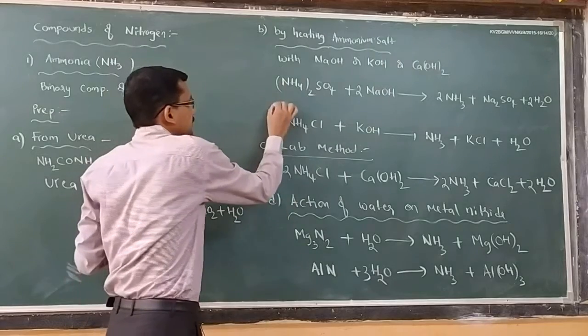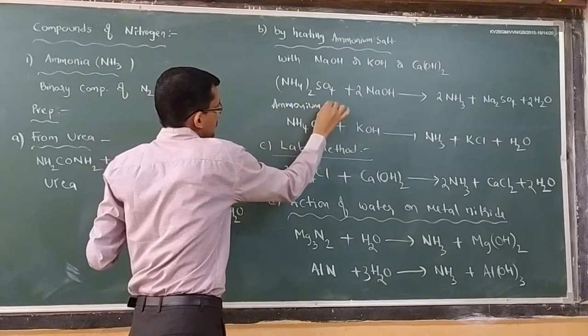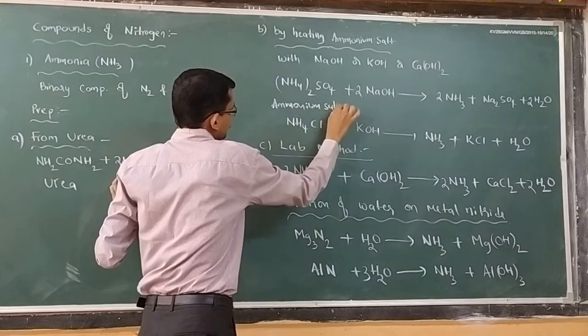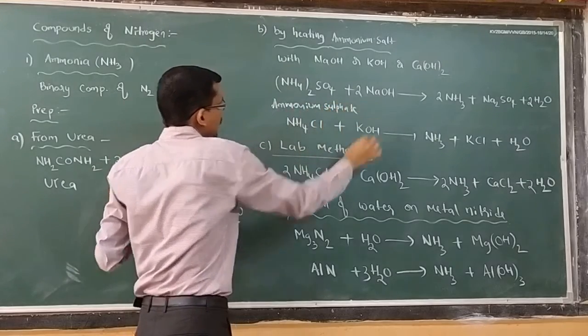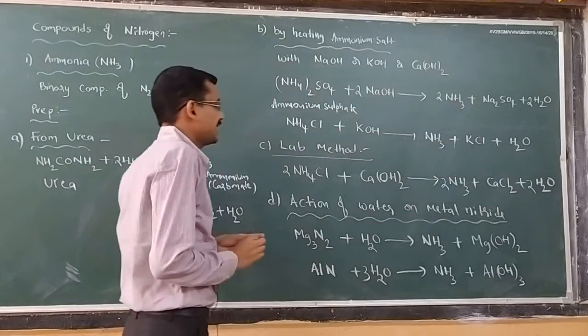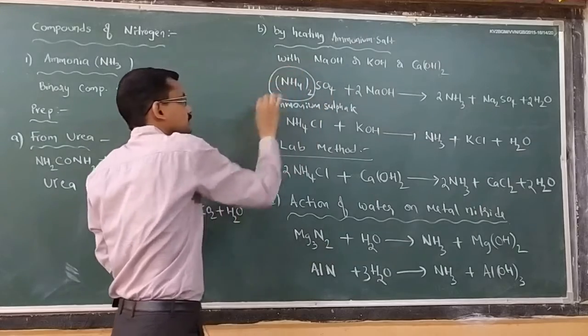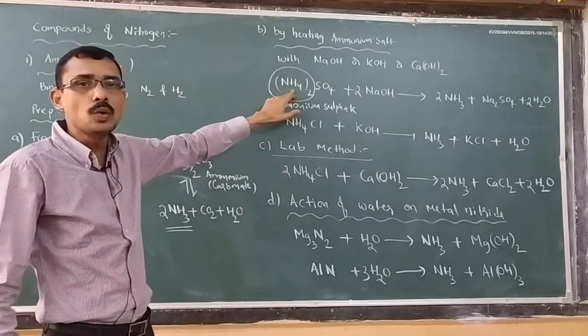Ammonium sulfate reacting with sodium hydroxide to give ammonia. Very simple: ammonium sulfate has ammonia here. In this case it has ammonium ion converting into ammonia.